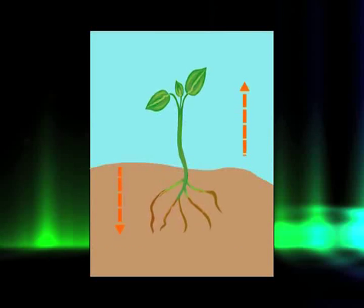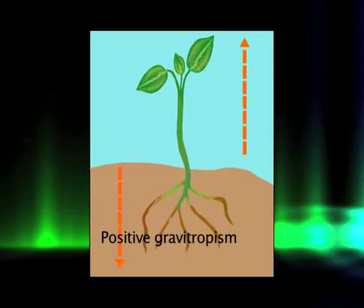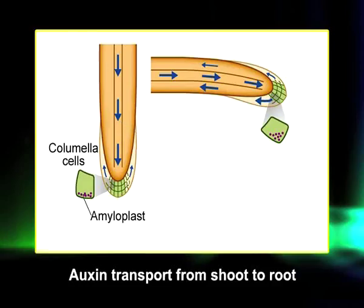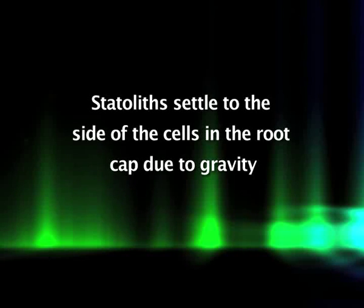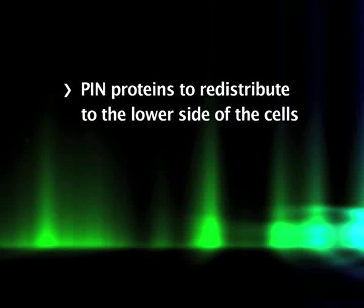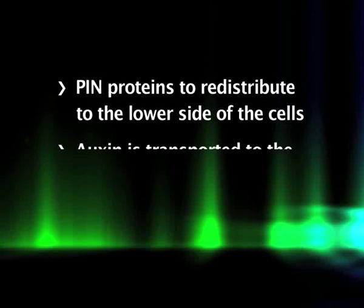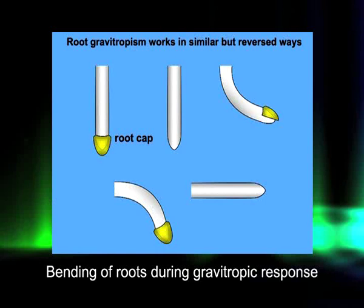Gravitropism is a plant growth response to gravity. Roots display positive gravitropism — they grow in the direction of gravity — while shoots show negative gravitropism — they grow away from gravity. Auxin synthesized in the shoot is transported to the root through the stele. When a root is placed horizontally, statoliths (amyloplasts) that function as gravity sensors settle to the lower side of cells in the root cap. This causes PIN proteins to redistribute to the lower side, transporting auxin there. This inhibits root cell elongation on the lower side and stimulates the upper side to grow faster, causing the root to grow downward.